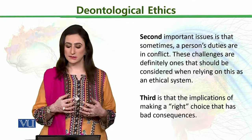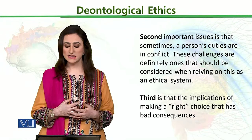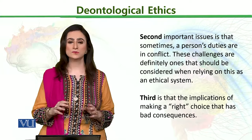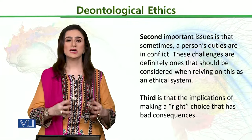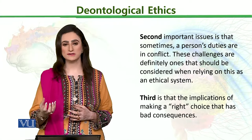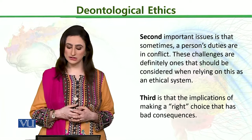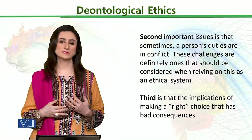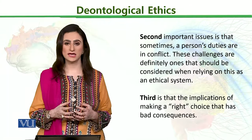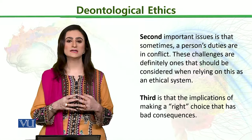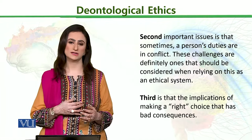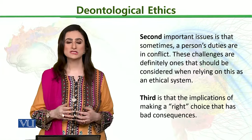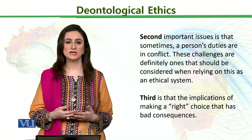The second important issue is that sometimes a person's duties are in conflict. These challenges are defined by the ones that should be considered when relying on this as an ethical system, so that you can make a better decision. Third is the implication of making a right choice that has bad consequences. Sometimes a researcher chooses what seems like the right choice, but its understanding is not good, hence the bad consequences. You can follow the theoretical foundation, be well equipped and knowledgeable, and know in which situation to apply it.